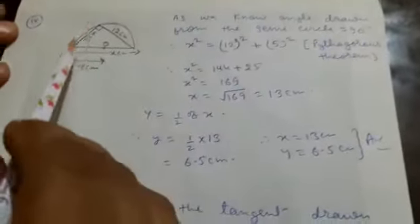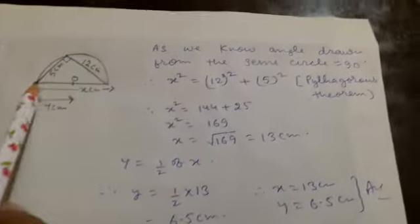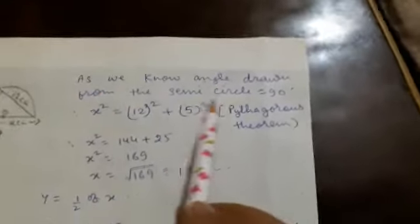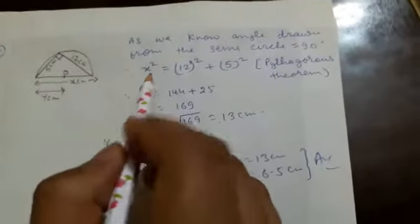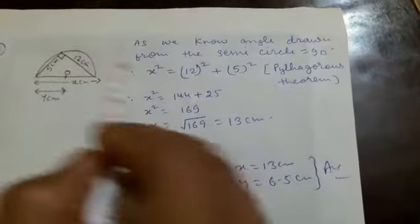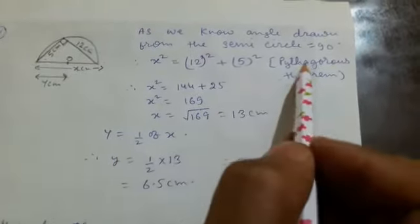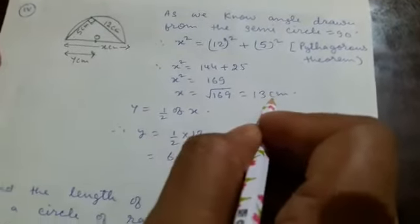The next question: this line is given as 5 centimeters, this is 12 centimeters, and we have to find x and y. The angle drawn from the semicircle is 90 degrees, so this triangle is a right-angle triangle. By Pythagoras theorem, x squared equals 12 squared plus 5 squared, which equals 144 plus 25 equals 169, so x equals root of 169, which is 13 centimeters.